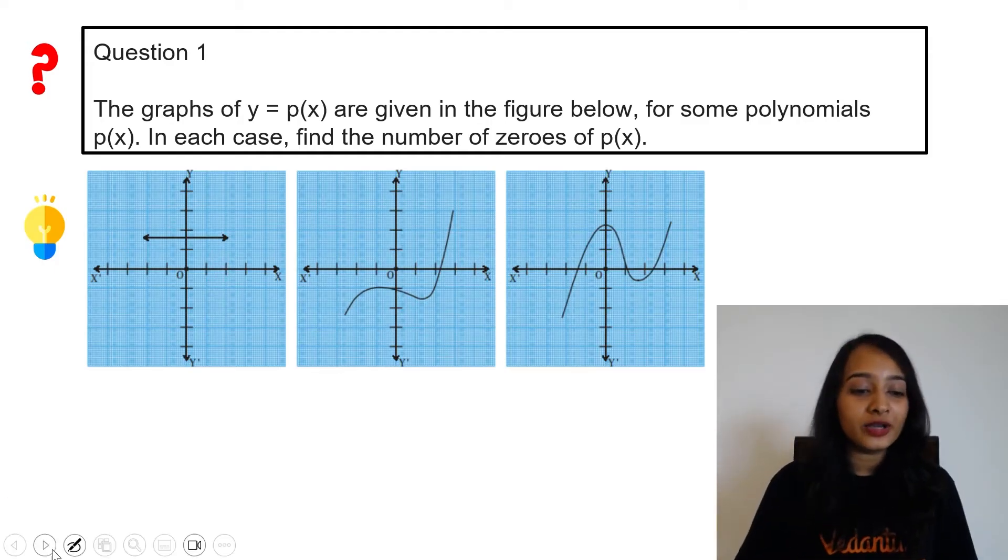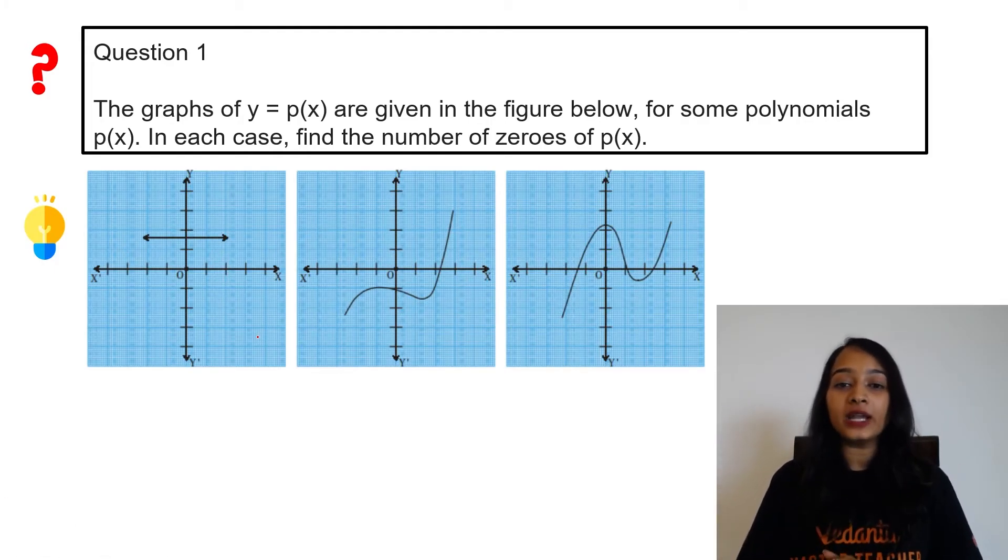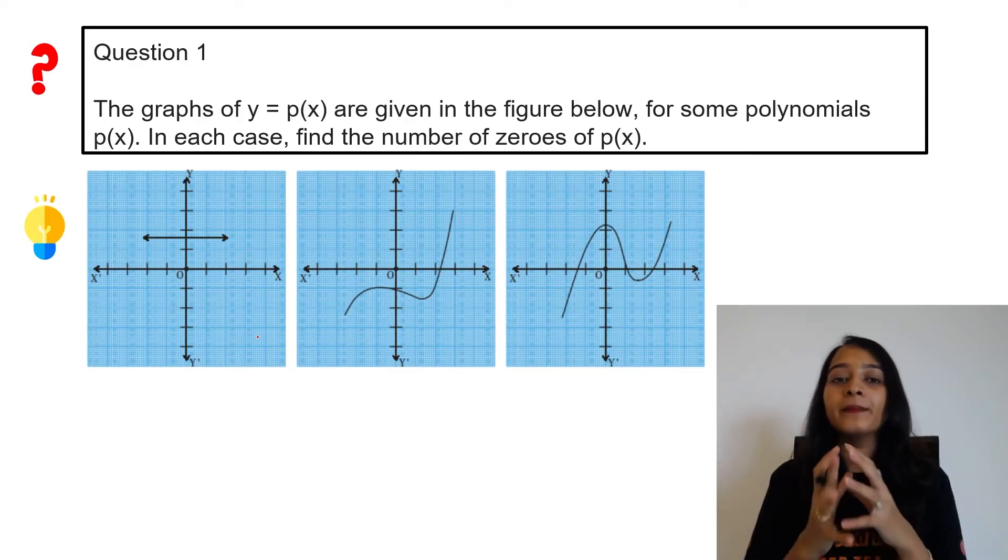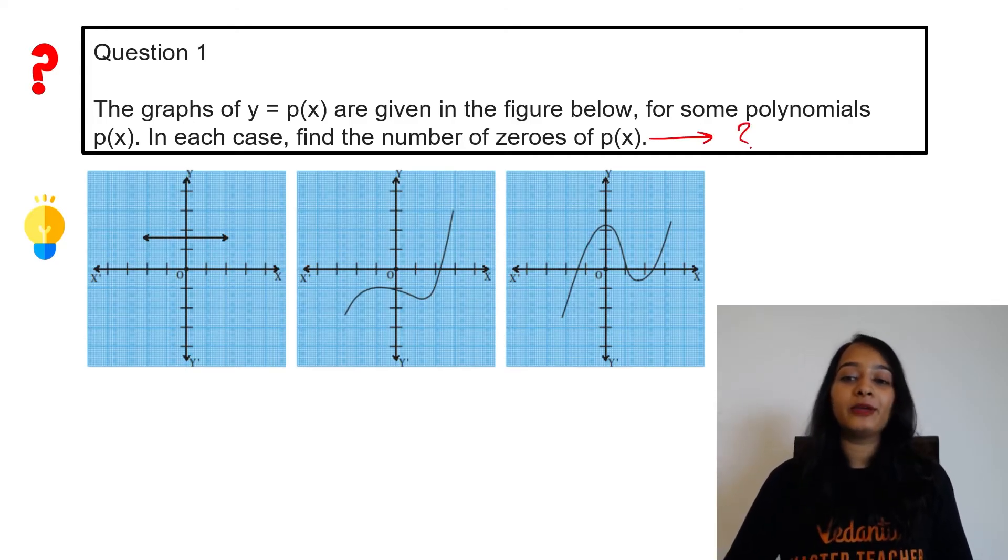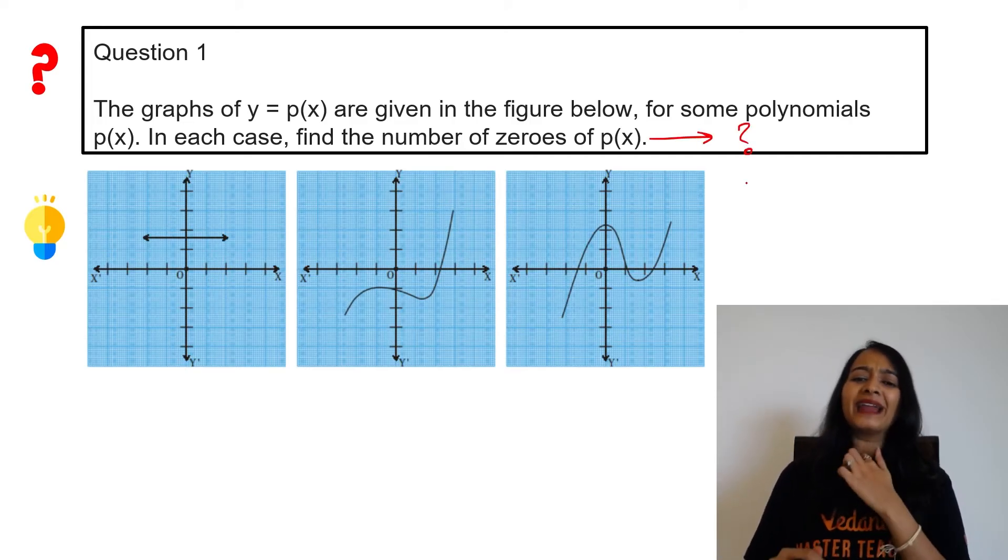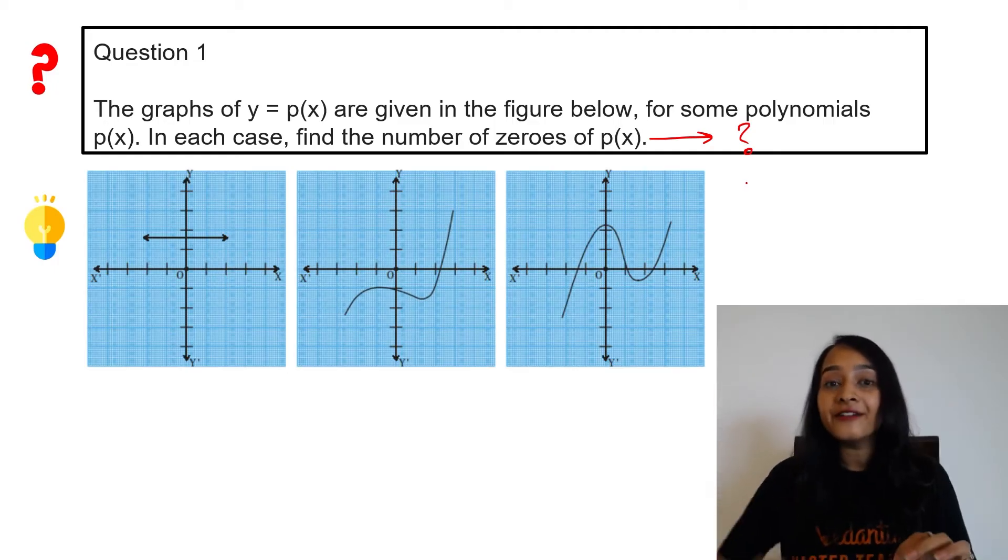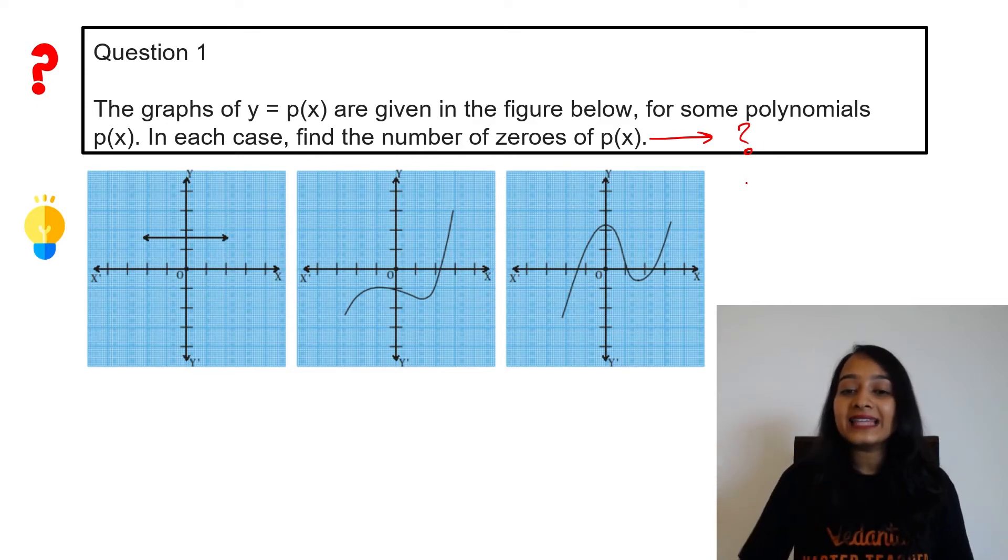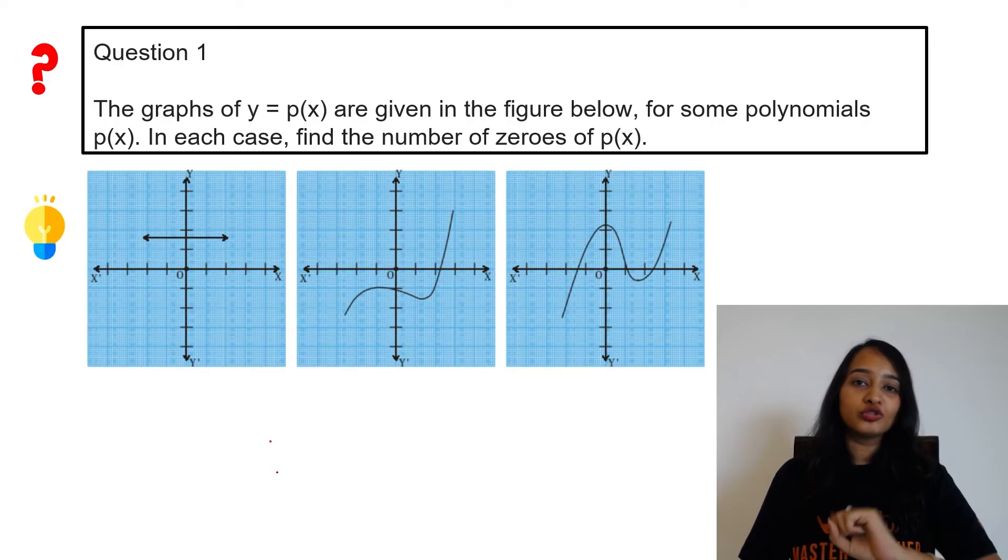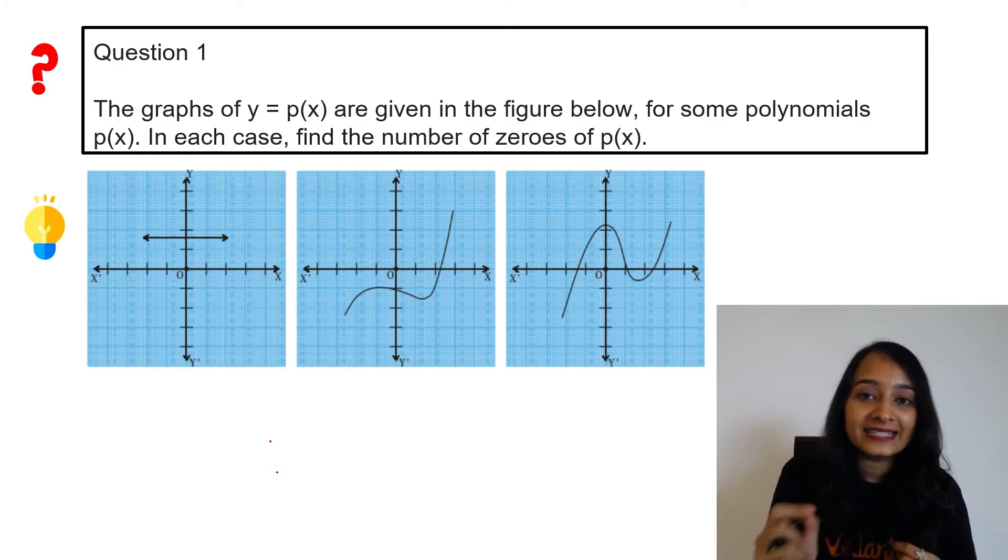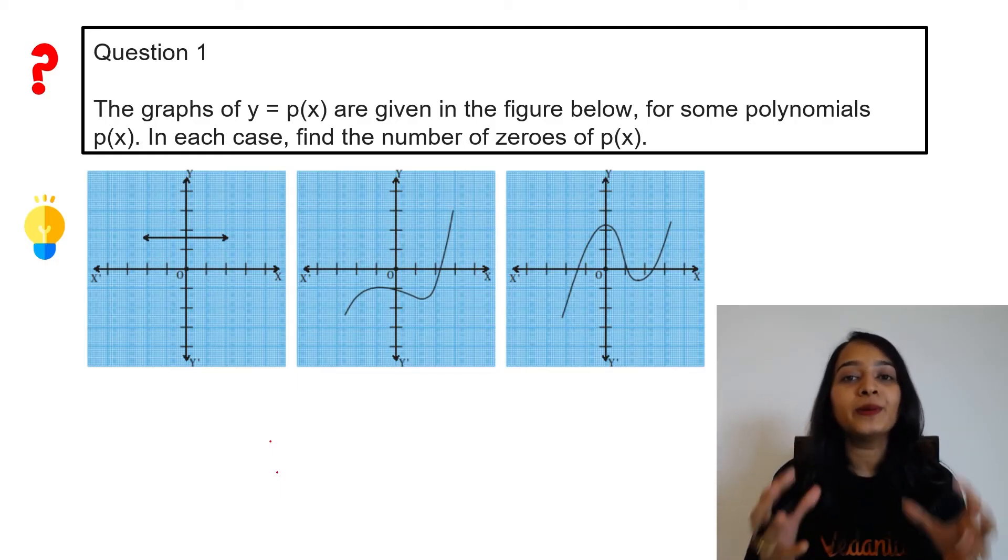Question number one on your screen. This graph is the graph of some polynomial p(x). We have to find the number of zeroes of that polynomial p(x). The trick here is the graph of x-axis. The horizontal axis is our x-axis.